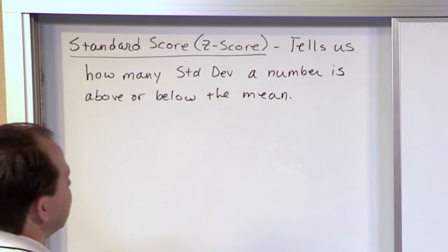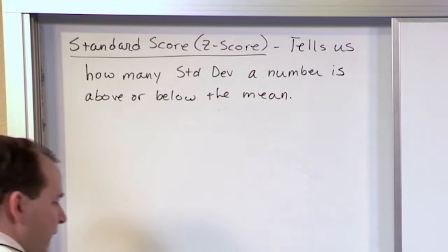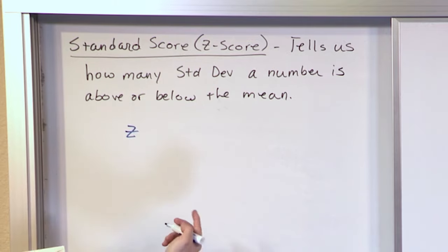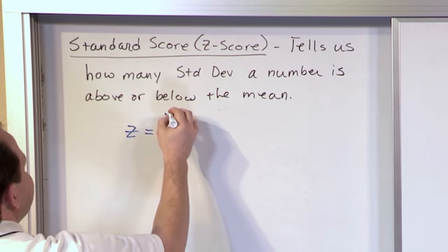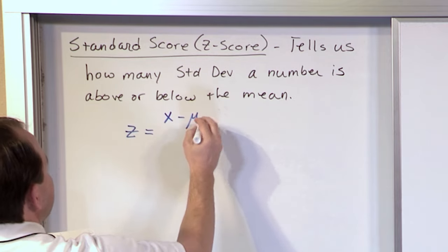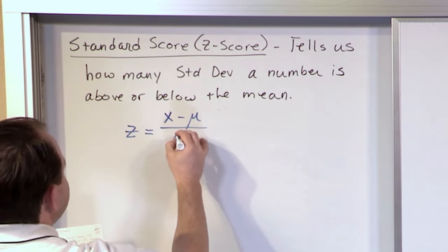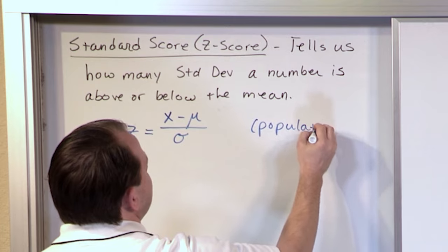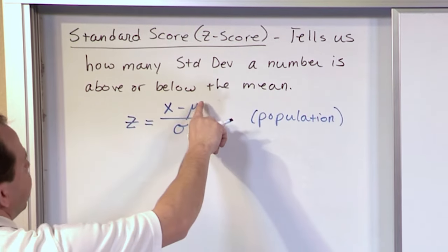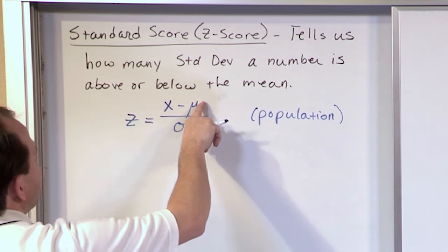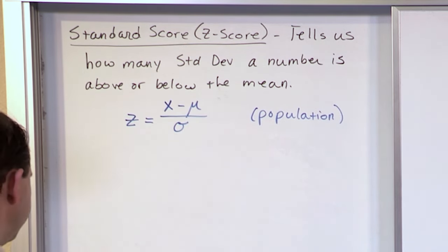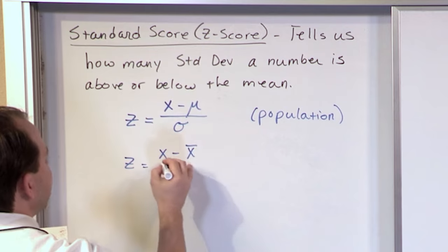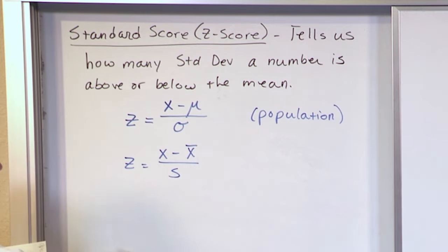It lets us compare between data sets and between values in different populations. To calculate the Z-score: Z is equal to the data value you have minus the mean of the data set, divided by the standard deviation. This is for a population — you know it's a population because it uses mu for the mean and sigma for the standard deviation.